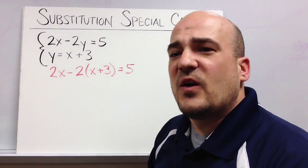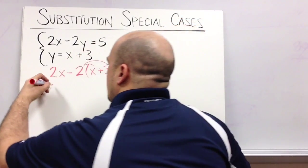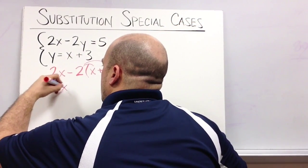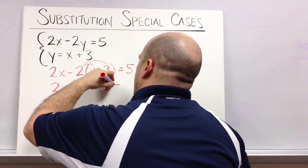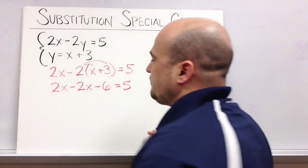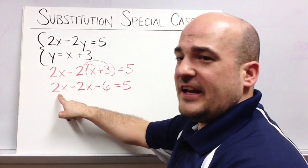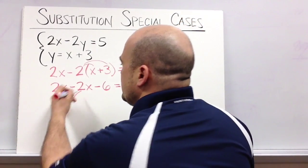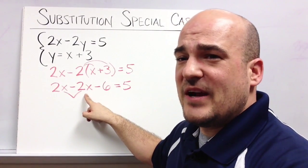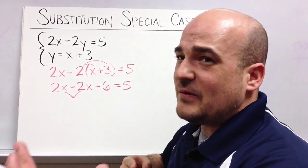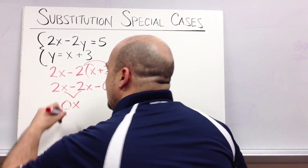So I do that and I go ahead and distribute this negative 2 like I always do. And then I look to combine like terms and again I've got an x here and an x here so I combine those. In this case I have 2x and then I take away 2x, and when I have 2x and then I take away 2x I'm left with 0 or 0x.